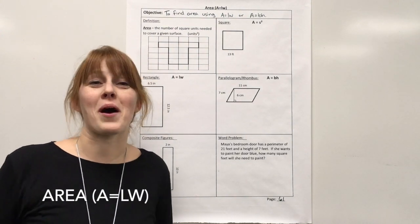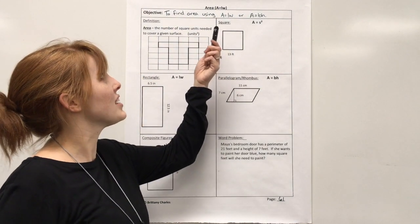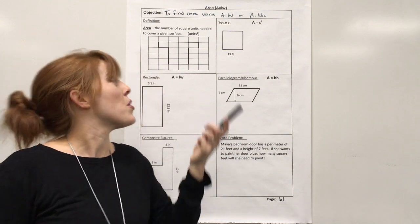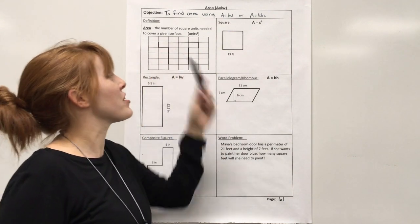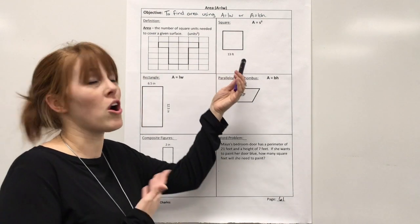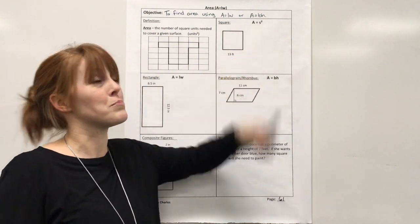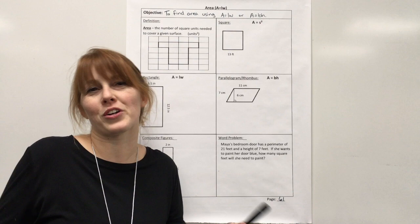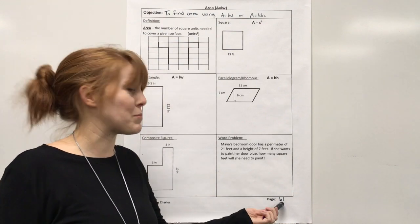Hi guys, today we're going to learn about area using the formula length times width. Our objective is to find area using area equals length times width, which could also be seen as area equals base times height, just depending on how you look at the figure. And this is page 61.